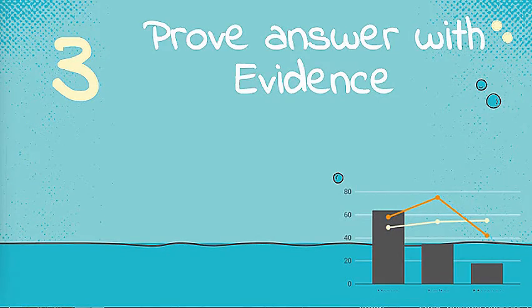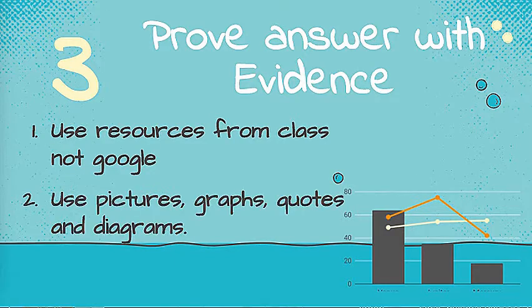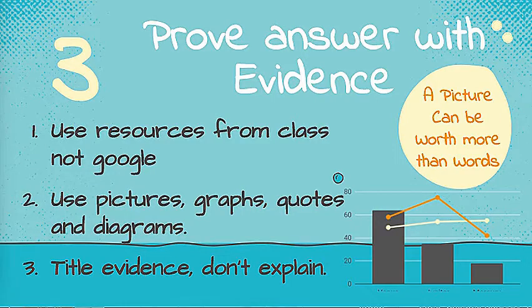Rule number three: prove your answer is correct by providing evidence. Imagine it is the thing you are pointing to when you say, "See, I told you!" So where do we get this evidence? Since we are new to this process, I will give you all the resources you need. Using something else like Google is a sure way to get a lower score. This could be a quote, a picture, a graph, data, or even a diagram. You do have to have words here, but it is not a full explanation — it is only a description of what you are pointing out. Do not explain why it is there, just what is there. Think of it as a title or a caption underneath whatever you are using.